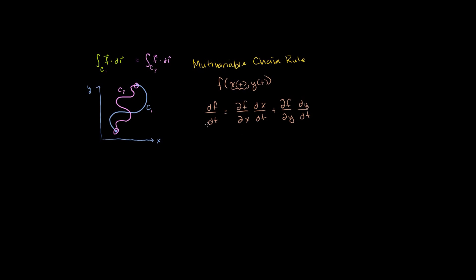This is saying: as I move a little bit dt, how much does f change? There are two ways f can change — with respect to x and with respect to y — so we add those together as they both change with respect to t. If you imagine canceling the partial x with dx and partial y with dy, you get the total change of f with respect to t. That's the multivariable chain rule.